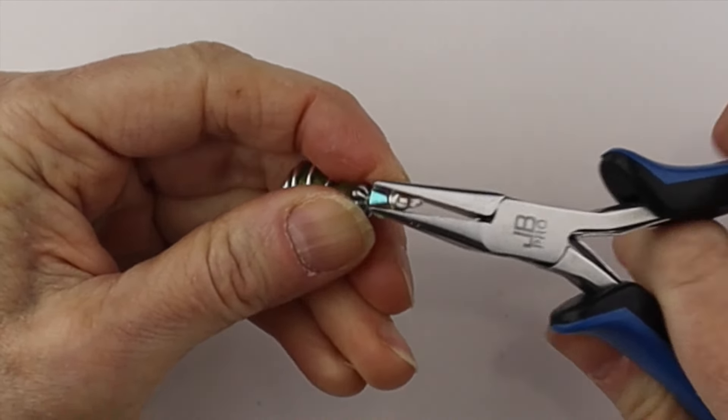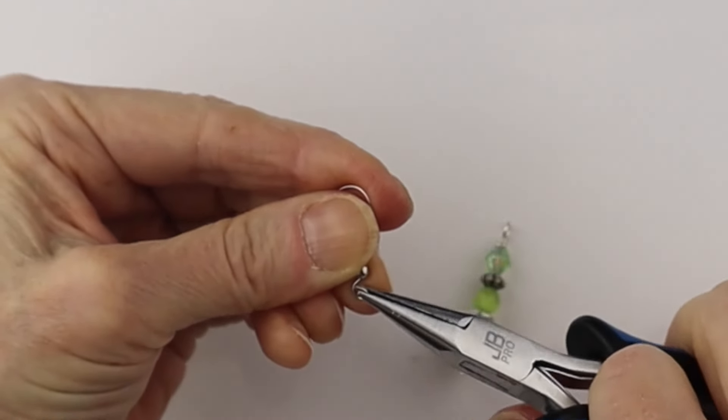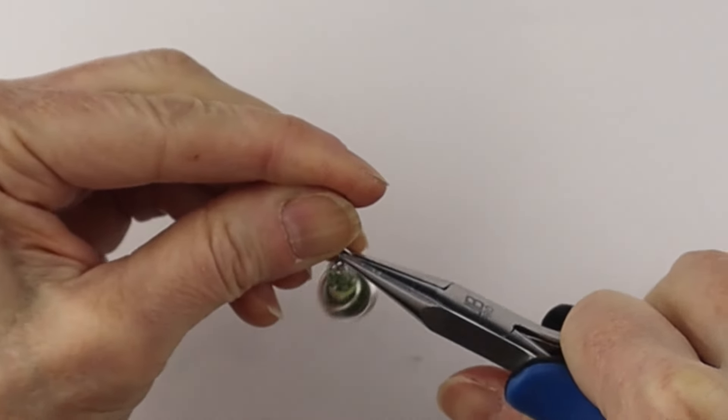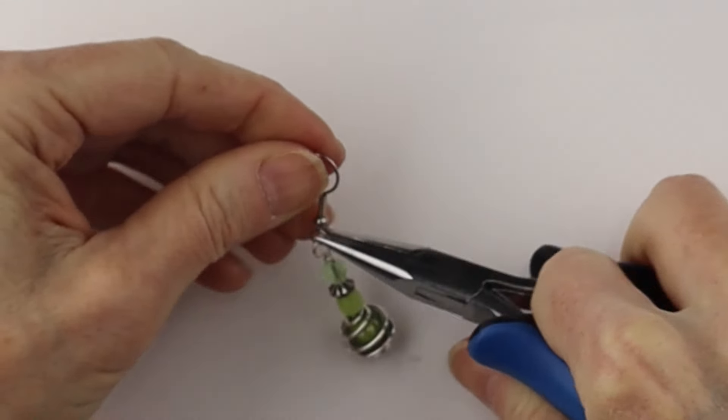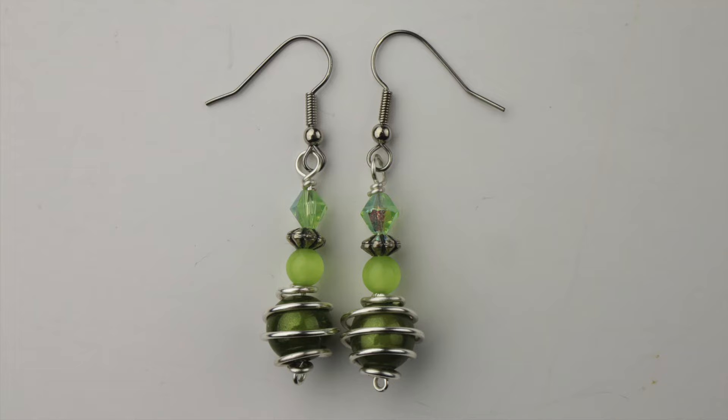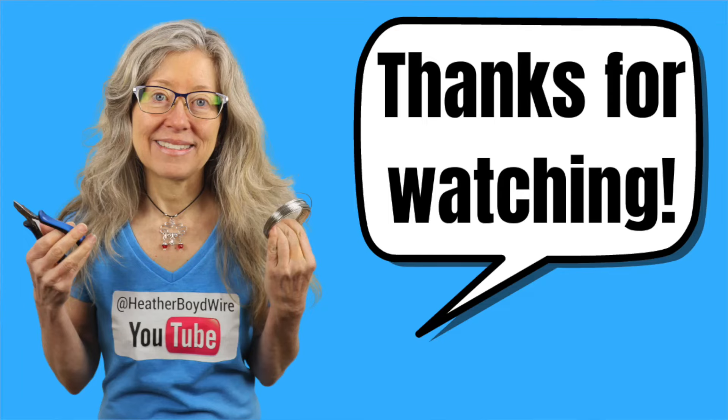Pinch it in with the flat pliers, then get an earring hook or make your own. Pop it on the hook, close it up, and there are your beautiful caged bead earrings. Thanks so much for watching the video.